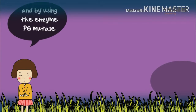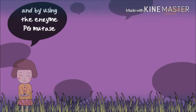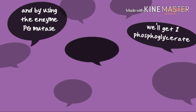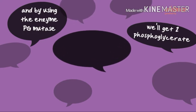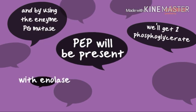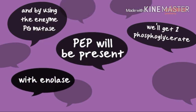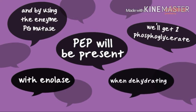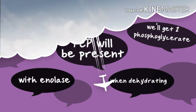Phosphoglycerate mutase will get us to 2-phosphoglycerate. PEP will be produced with enolase when dehydration occurs, and then pyruvate kinase generates ATP.